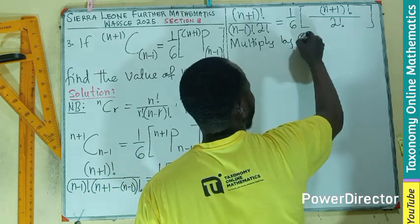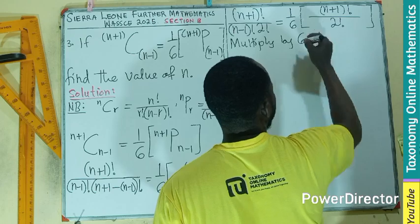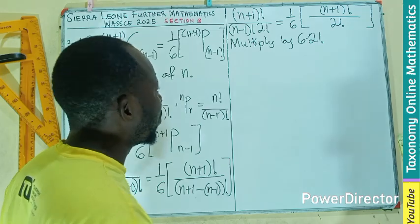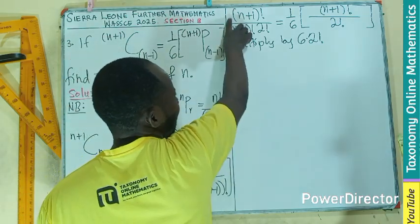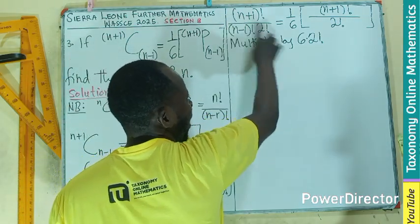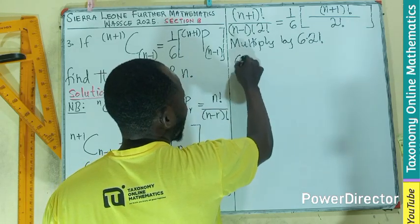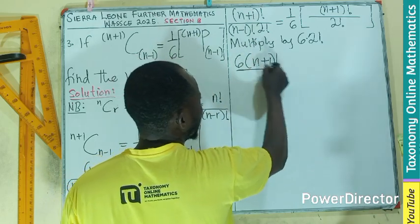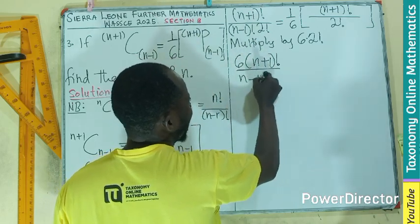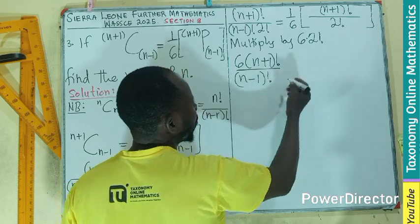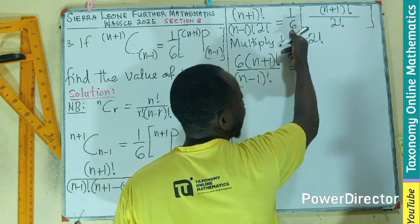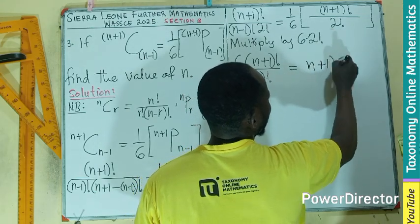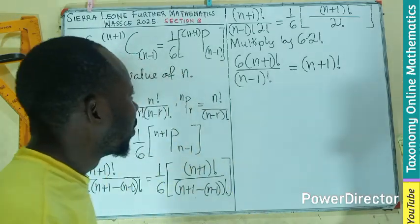Multiply by 6 times 2 factorial. Let me put times here. So if I multiply, I will not be showing the multiplication. I am managing space. You can show that. So if I multiply here, the 6 will stay. The 2 factorial in the denominator will cancel. So I will be left with 6 times n+1 factorial divided by n-1 factorial. 6 is canceling here. Factorial is canceling. And I will be having only n+1 factorial.